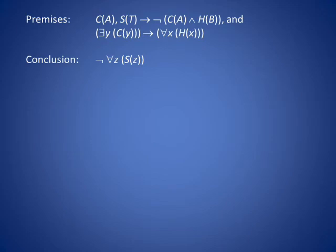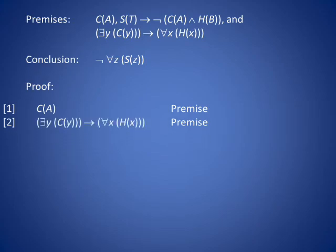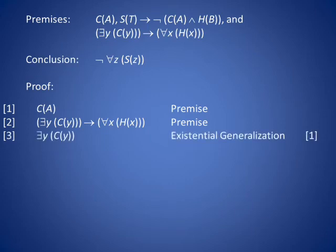If you would like to complete this proof on your own, please pause this video now. On line 1, we place our first premise, c of a. And let's place premise 3 on line 2: there exists a y such that c of y implies for all x, h of x. The antecedent of the implication in line 2 is there exists a y such that c of y. To obtain that, we existentially generalize line 1 to say there exists a y such that c of y on line 3.